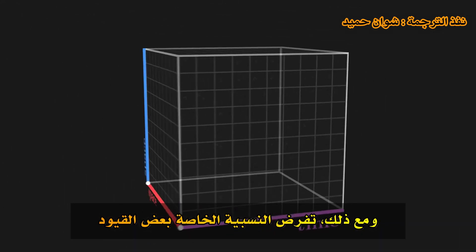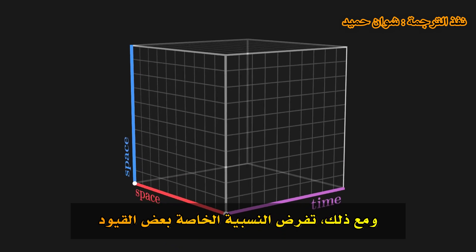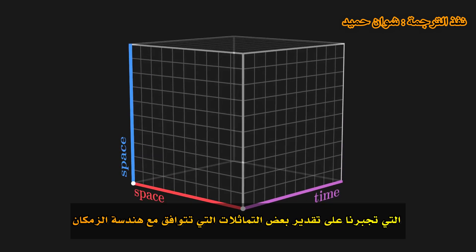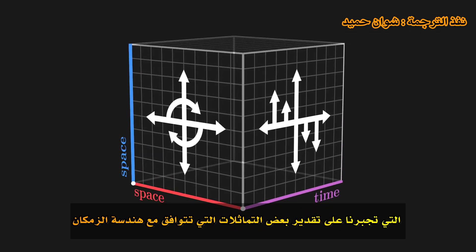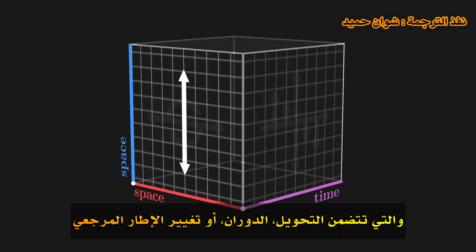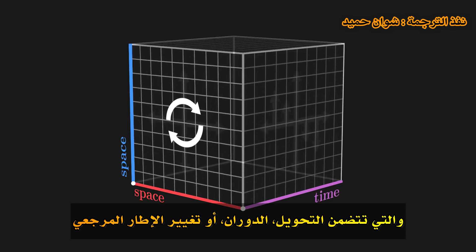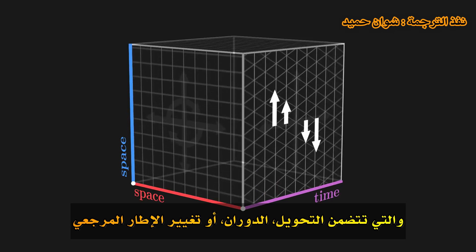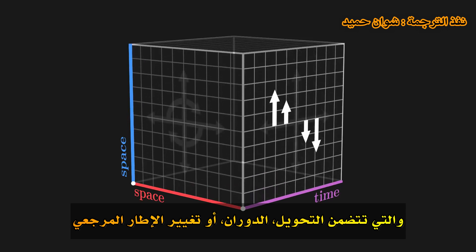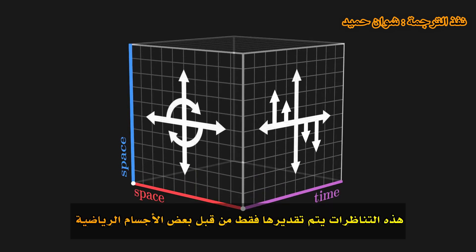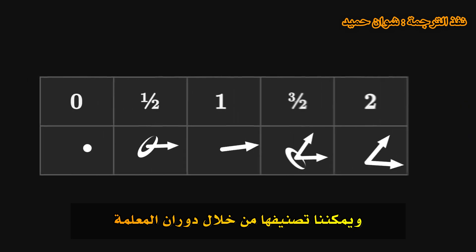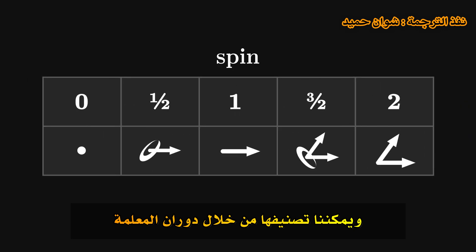That said, special relativity imposes some restrictions. It forces us to respect certain symmetries which correspond to the geometry of space-time: symmetries of translation, rotation, or changing frame of reference. These symmetries are only respected by certain mathematical objects, and we can classify them with a parameter — spin.